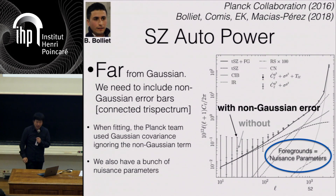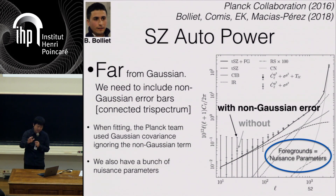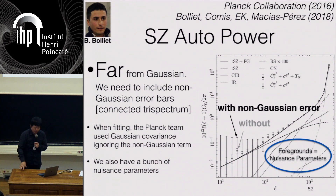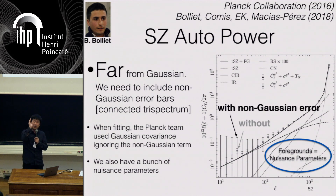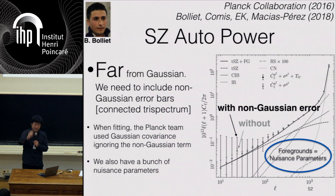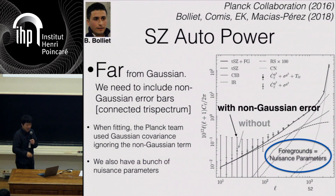Now look at the SZ. You take the SZ map from Planck and compute the power spectrum. It's far from Gaussian again, so you have to take into account the tri-spectrum covariance — which was ignored by the Planck team's analysis — and that leads to some revision of the measurements. We have a bunch of nuisance parameters because component separation of the nine frequency bands of Planck — containing CMB, SZ, radio sources, CIB, and other things including correlated noise — leaves SZ plus a bunch of other things in the power spectrum that you need to marginalize over.